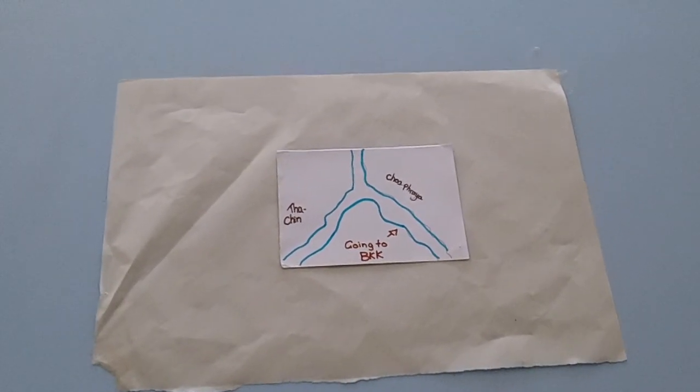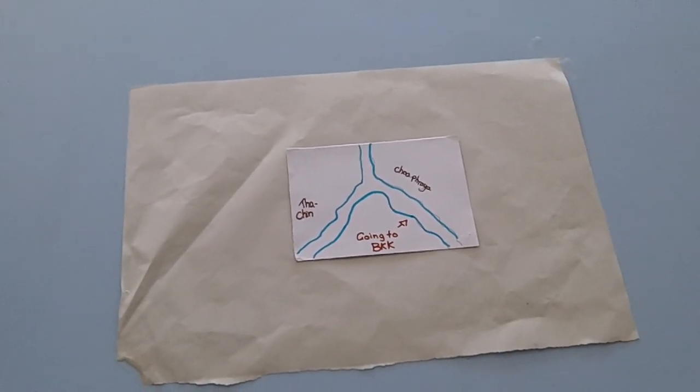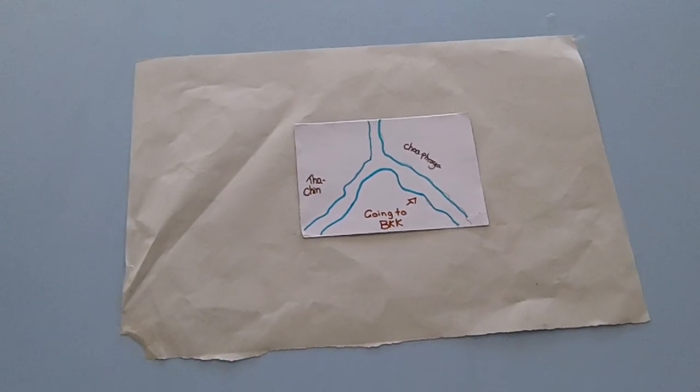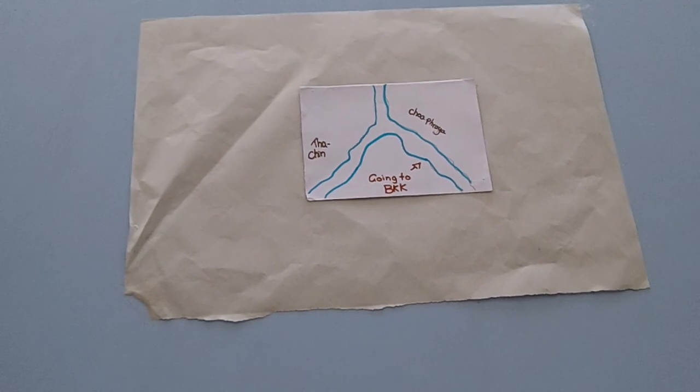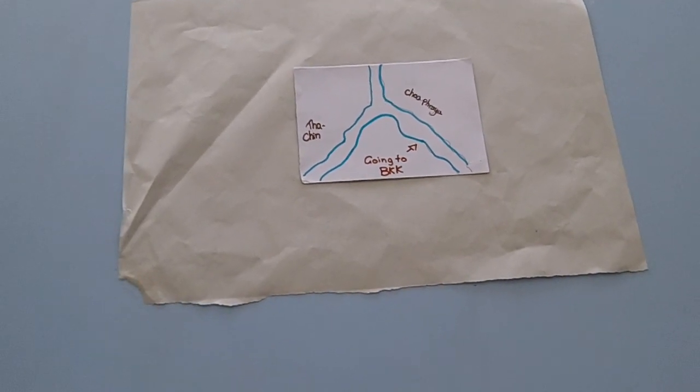The Chao Praya separates into two, one known as the Ta-Chin River and one as the Chao Praya. The Chao Praya will continue going to Bangkok and the other river will go to the west side.